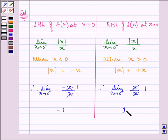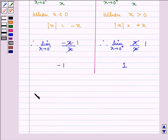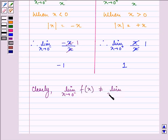Clearly, the limit as x approaches 0 from the left-hand side is not equal to the limit as x approaches 0 from the right-hand side.